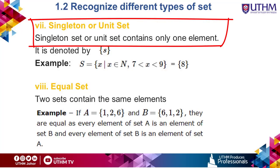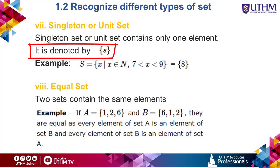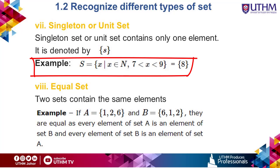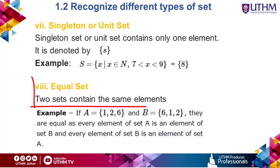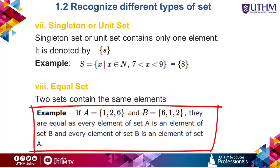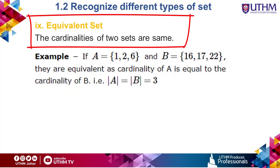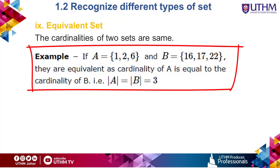A singleton or unit set contains only one element and is denoted by a single value between braces. Since the value of X between 7 and 9 is 8, it is called a singleton as it has only one value. An equal set refers to two sets with the same elements — although the arrangement of elements in sets A and B may differ, the values are the same, so we conclude they are equal sets. An equivalent set refers to two sets with the same cardinality. Although set A has different values from set B, the cardinalities of both sets are the same, that is 3.